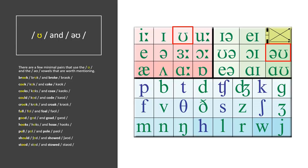There are a few minimal pairs that use this vowel and the O vowel that are worth mentioning: brook and broke, cook and coke, cooks and coax, could and code, crook and croak, full and foal, good and goad, hooks and hoax, pull and pole, should and showed, stood and stowed.